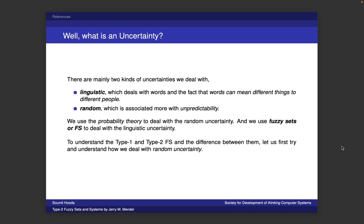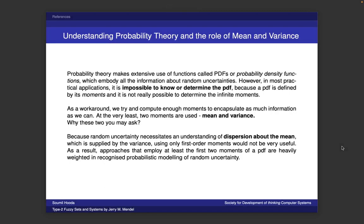Randomness, on the other hand, deals with unpredictability and variances in numbers. To deal with these kinds of uncertainties we need to use some mathematical modeling. Randomness is something we've been dealing with for a long time — we've been using probability theory to deal with random uncertainty. We do this by employing PDFs, probability distribution functions. These functions are based on moments and there are an infinite amount of them, and it's not really easy to model out an infinite number of moments.